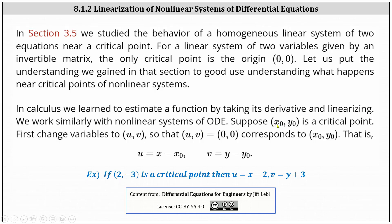Suppose (x₀, y₀) is a critical point. First, change variables to u, v so that (u, v) equals the origin (0, 0) corresponds to (x₀, y₀). That is, we let u equal x minus x₀ and v equal y minus y₀. As an example, if (2, -3) is a critical point, x₀ equals 2, y₀ equals negative 3, and therefore we let u equal x minus 2 and v equal y plus 3.